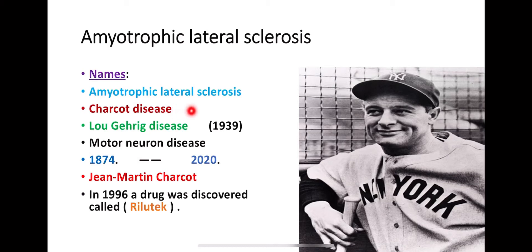This is Charcot disease, also known as a chronic progressive disease. If we cut out amyotrophic lateral sclerosis into its components, it means that there is atrophy — the muscles will never maintain their normal size or function.